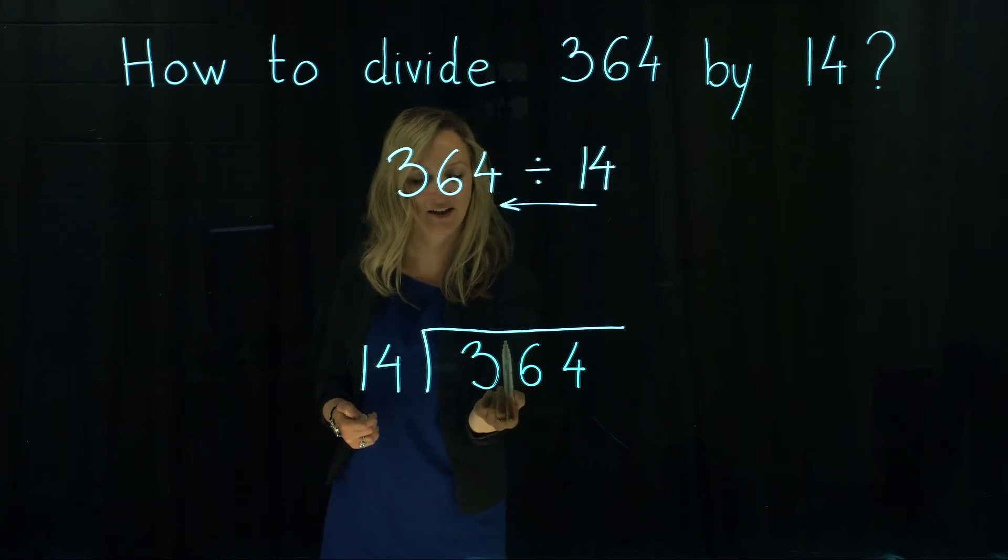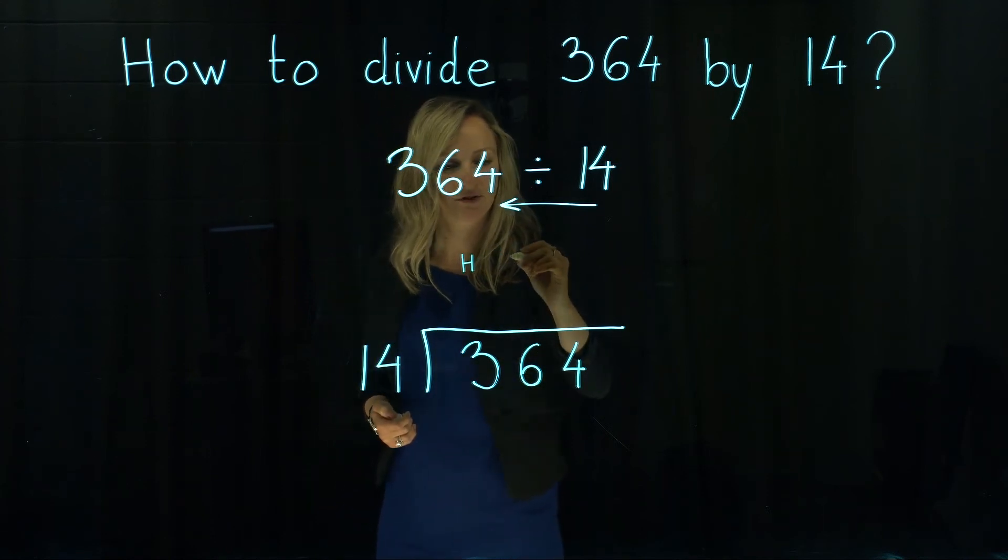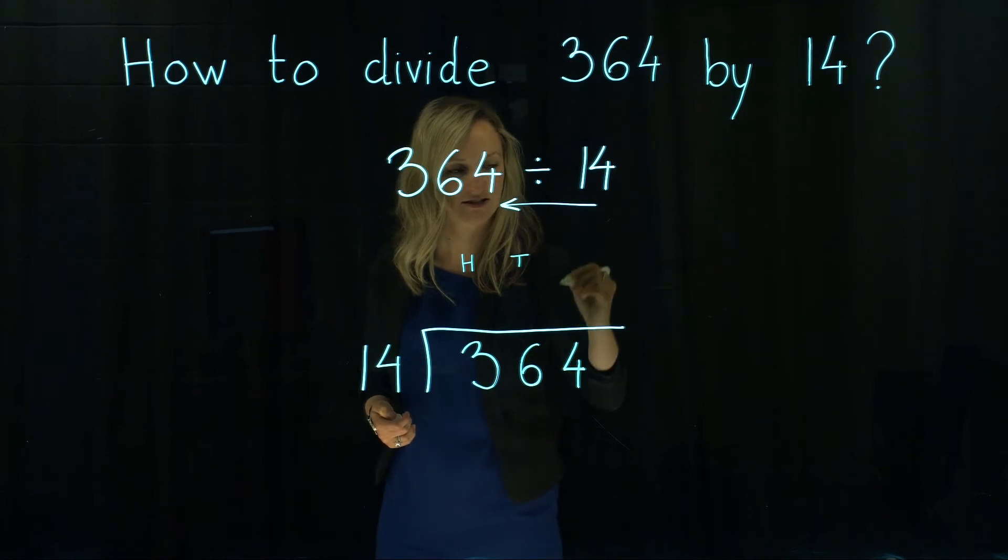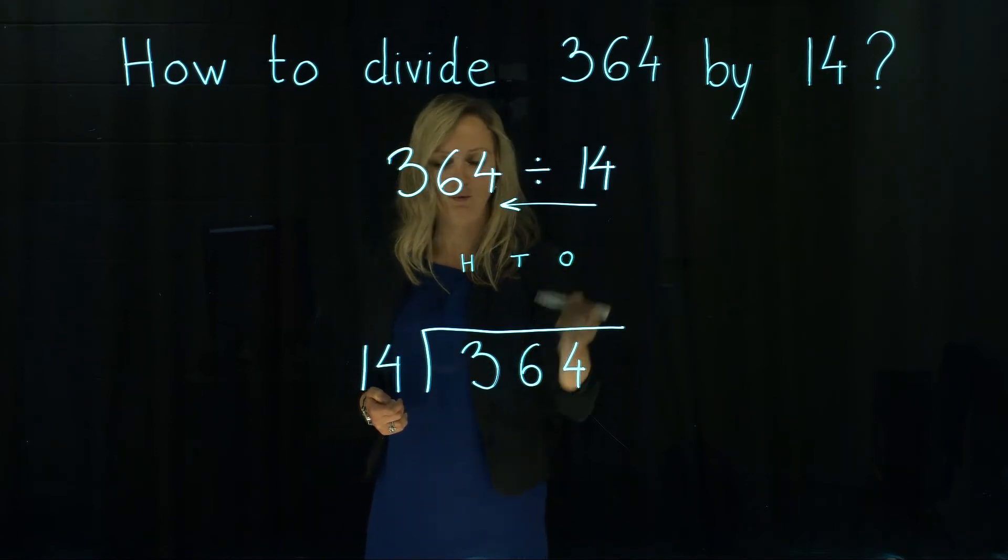We always start at the larger place value so we've got hundreds here, we've got tens here and ones here. So three hundreds, six tens and four ones.